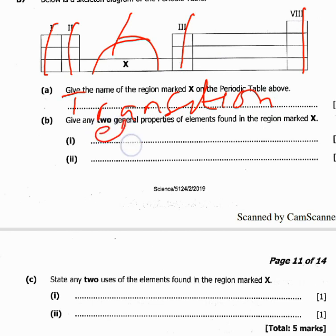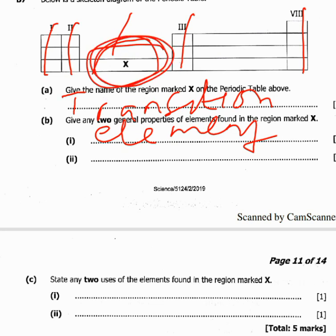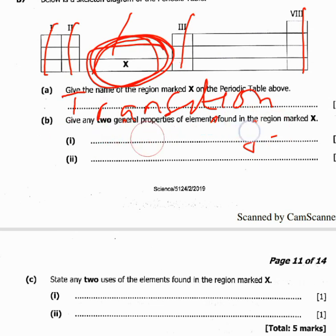The region marked X contains the transition elements. Most transition elements have variable valencies and variable oxidation states. They also have high melting points, high boiling points, and high densities. Those are some of the properties of transition elements.